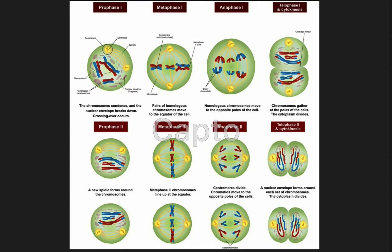Meiosis is a special type of cell division that occurs in sexually reproducing organisms in order to produce gametes, such as a sperm or egg cell. It involves two rounds of cell division that ultimately results in four cells with only one copy of each chromosome.